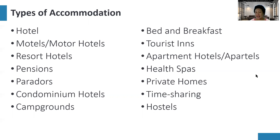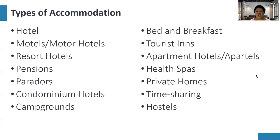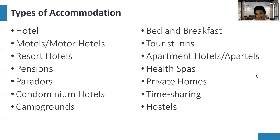Next is tourist inns, which are a low-budget type of accommodation that usually just provides a bed for the guests. Next is apartment hotels or appartels — an apartment type of accommodation that includes a kitchen and a bed, where guests can cook their own meals.